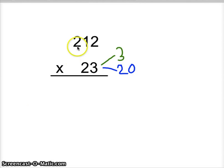Alright, we're going to multiply 212 times 23. We're going to split it up. We're going to do 212 times 3, and then 212 times 20.